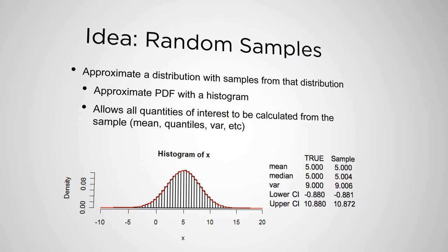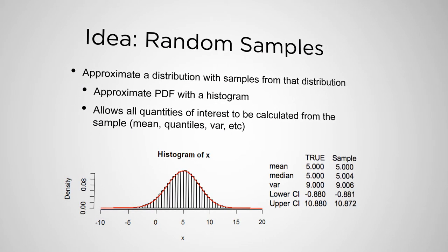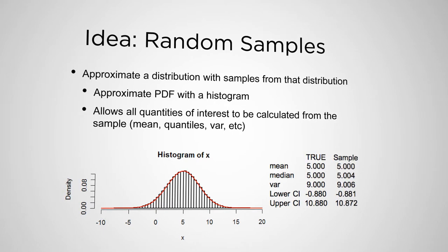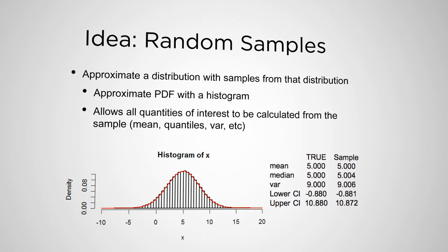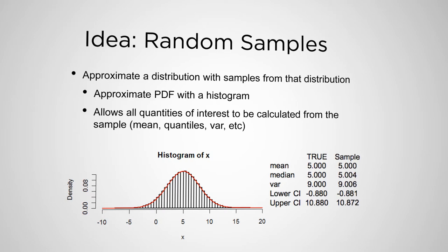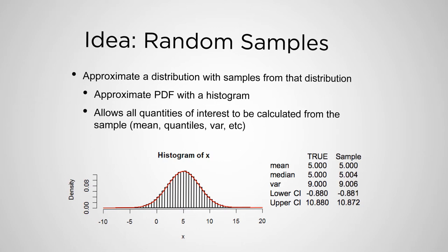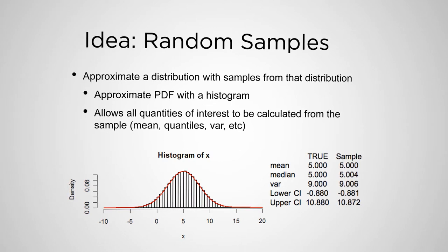One of the things we rely on a lot in numerical techniques for calibrating models — such as Bayesian MCMC approaches — is this idea that we can approximate a probability distribution with samples from that distribution. When we do model calibration in a Bayesian sense, usually what we get is not a written-down distribution for the parameters, but samples from that parameter distribution that we can then summarize as a histogram and calculate means, variances, and quantiles from.